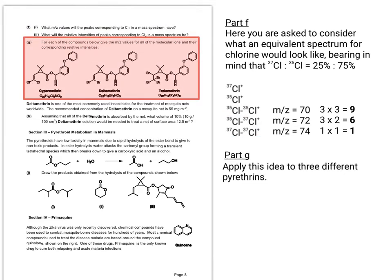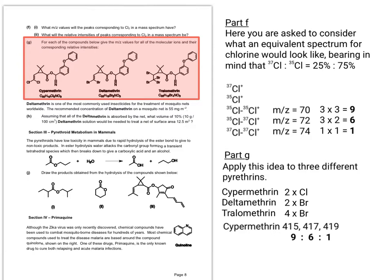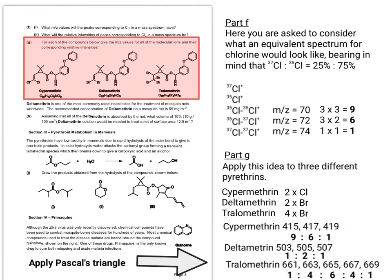In part G, they want you to apply this idea mathematically to three different pyrethrins, working out all the molecular ions and their corresponding relative intensities. We also worked with bromine earlier as well as chlorine. Starting with cypermethrin, which has two chlorines, it follows the 9:6:1 ratio from part F — so the molecular masses 415, 417, and 419 correspond to cypermethrin taking into account the different isotopes. For tralomethrin with twice as many bromines, it's really Pascal's triangle in action, and the probabilities have to be adjusted accordingly.